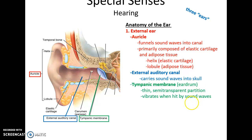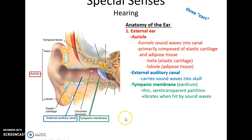Especially needed for hearing is the external ear. Here is the external ear. The external ear includes the auricle, which is the fleshy part of the ear on the outside. We can get it pierced. It funnels sound waves into the canal, into the external auditory canal.